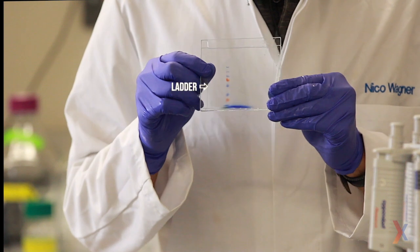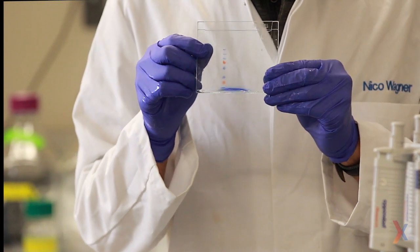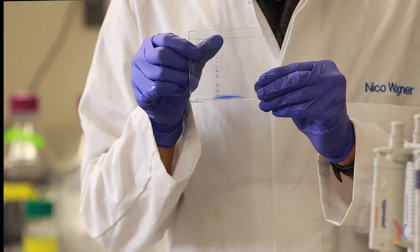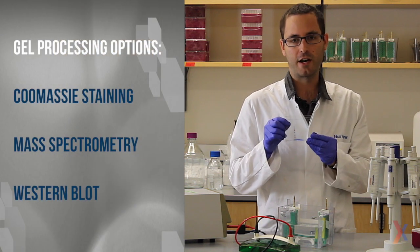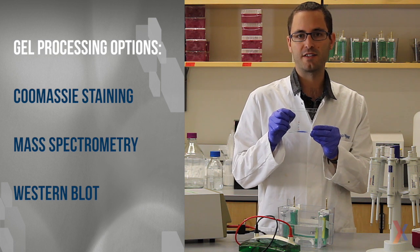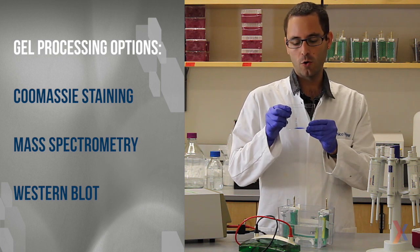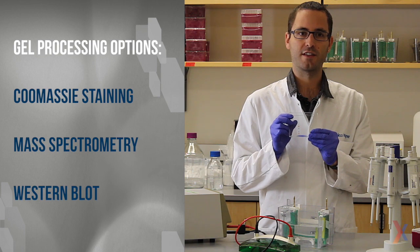From here on out you can do a few things with this gel. For one, we can take the gel out of the glass cassettes and do a Coomassie stain to just look at the protein bands that we have. Alternatively, we could cut out the protein bands and submit them for mass spec sampling, or we could take the gel out and do a Western transfer with this.